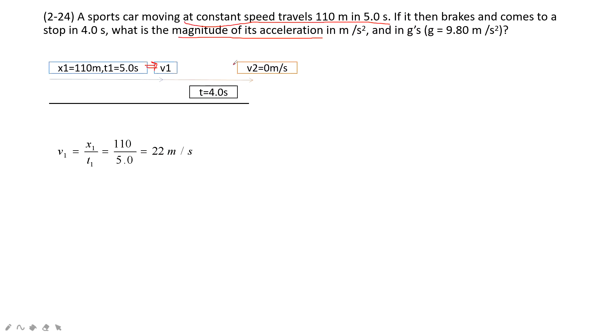And then we know V1, V2, and t. Very easily, we can get acceleration. Because this car slows down and stops, acceleration is in the negative direction.